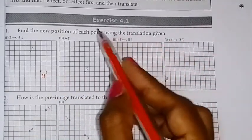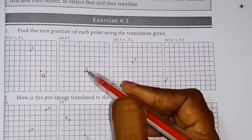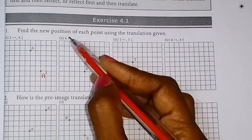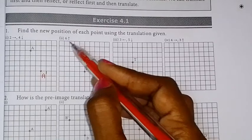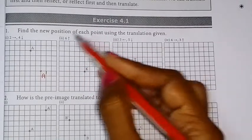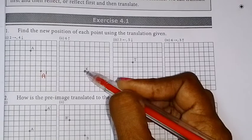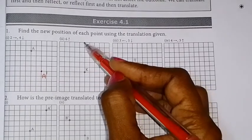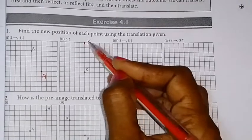Now, K is the point. Image is the new position. So, 6 units upwards move. So, here is 6 units upwards: 1, 2, 3, 4, 5, 6. So, here is K'.